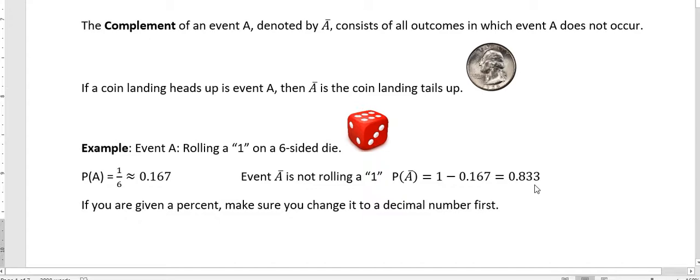The other way to think about that would be to say, if there's one chance that I will roll a one, how many chances are there that I will not roll a one? And that's five. And if you take five divided by six, you'll get 0.833. So you can subtract from 100% from what you know is your event A to find out what the complement would be.